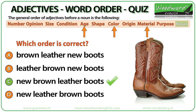New brown leather boots. New refers to age, brown is a color, and leather is the material the boots are made of. The order is: age, then color, then material.